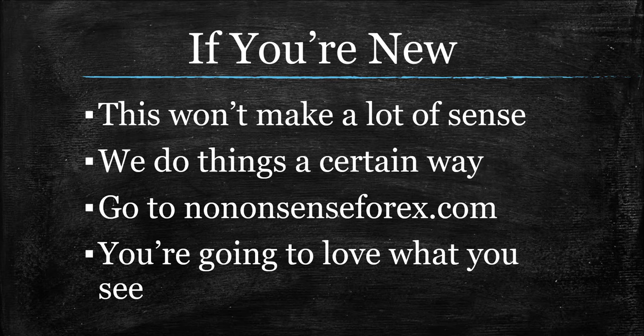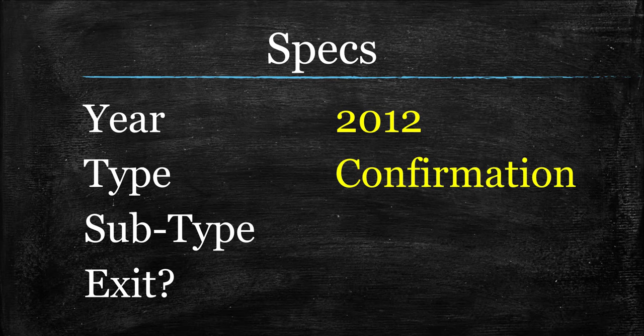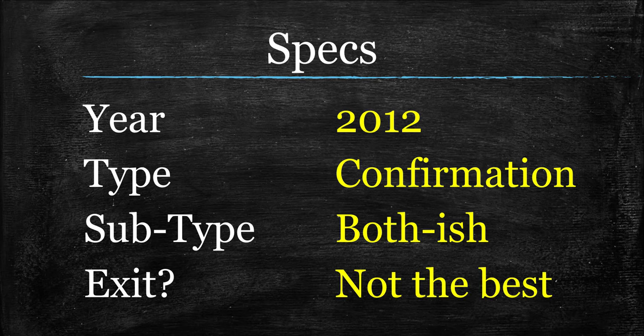For the rest of us advanced traders, let's get into the specs for the average sentiment oscillator. The year is 2012. This has been coded and recoded, which is good news because it means you can get it in MT4 and on TradingView, and possibly MT5 — check the blog for all of that. It's going to be a confirmation indicator. The subtype is somewhat unique to this particular indicator, something you have seen on this program before. You can make it whatever you want, but I would highly recommend you keep it both-ish. And for exits, not my favorite, but that's all subjective.